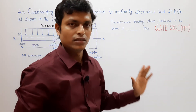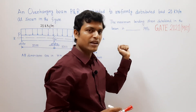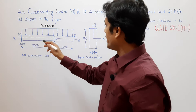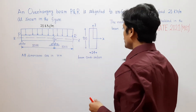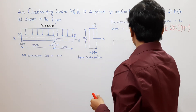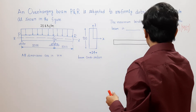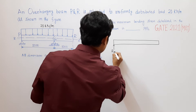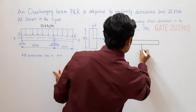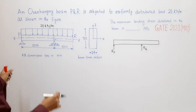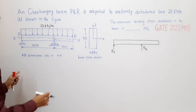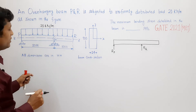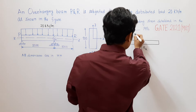To determine bending stress, we need to find the maximum bending moment developed in the beam. First, let us determine the reaction forces by drawing the free body diagram. The total load is 20 kilonewton per meter over a length of 2000 plus 1000 millimeter, that is 3 meters, giving 20 into 3 equals 60 kilonewton acting at the midpoint of the beam.